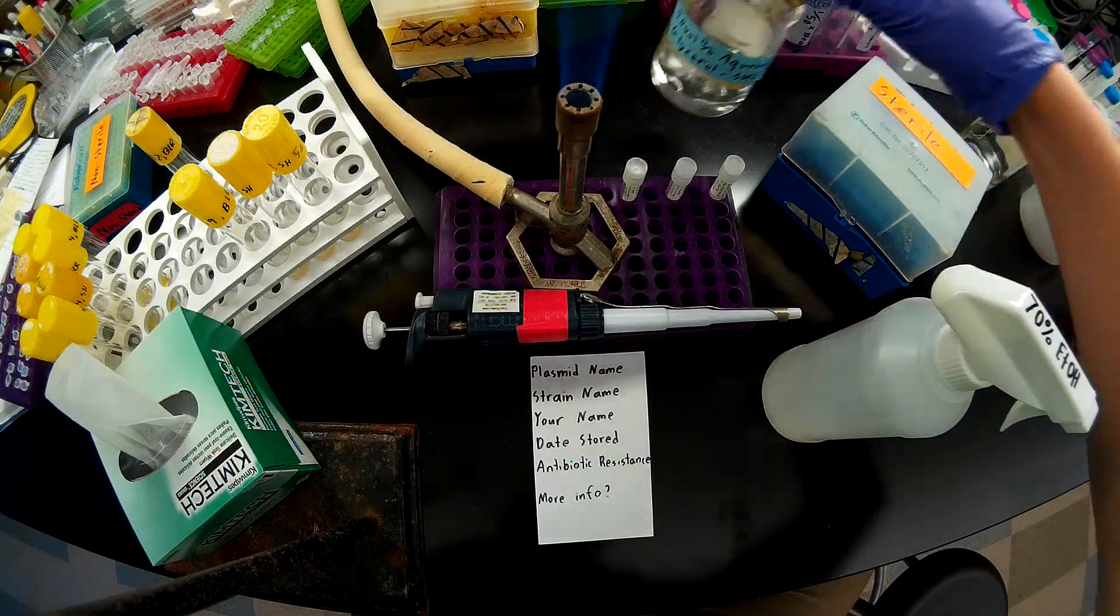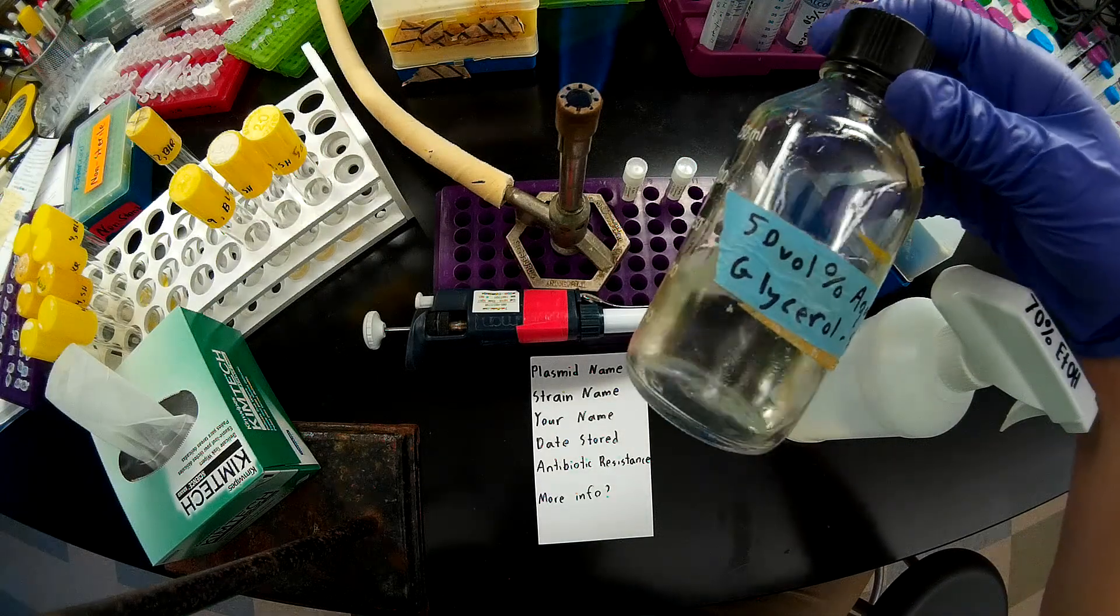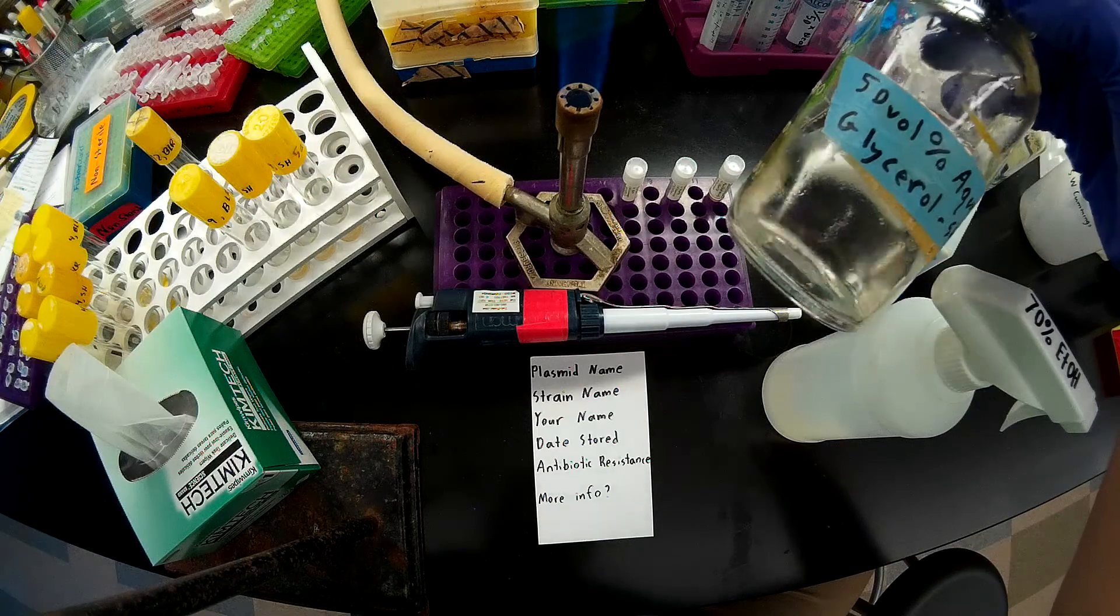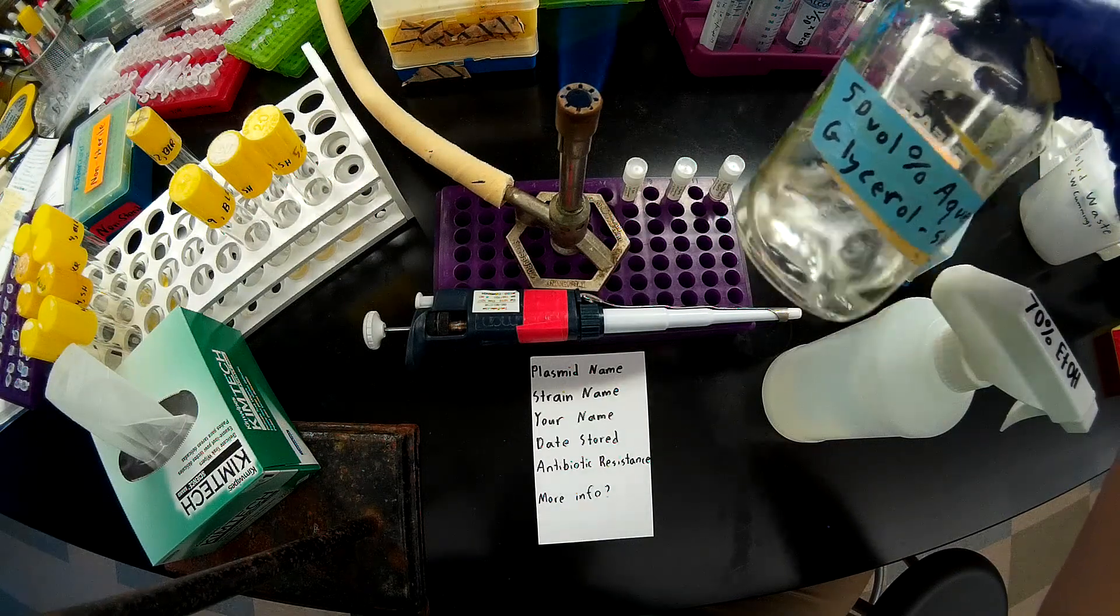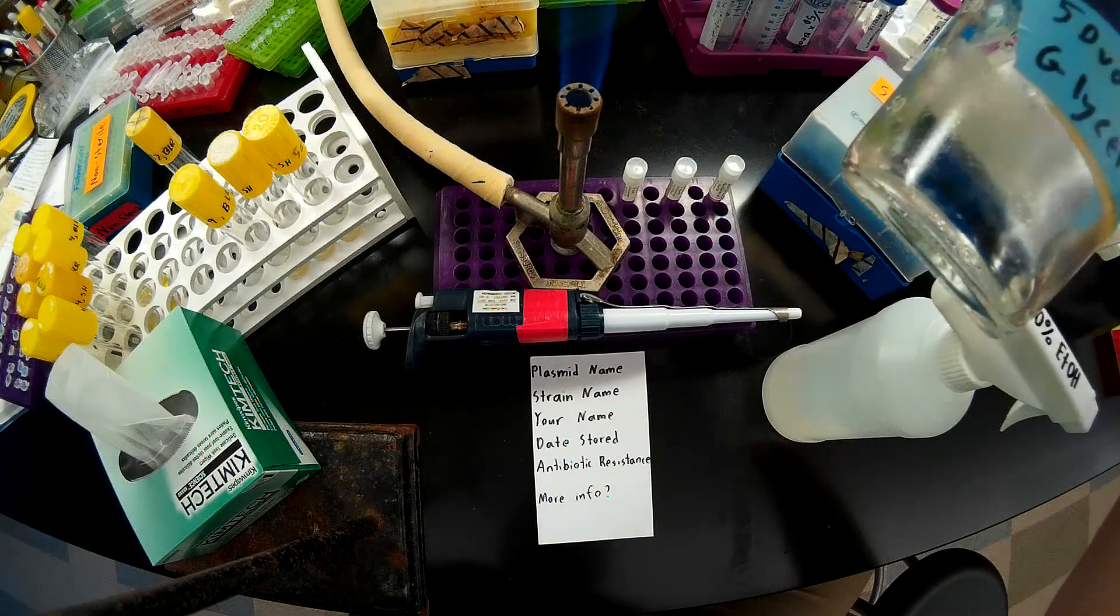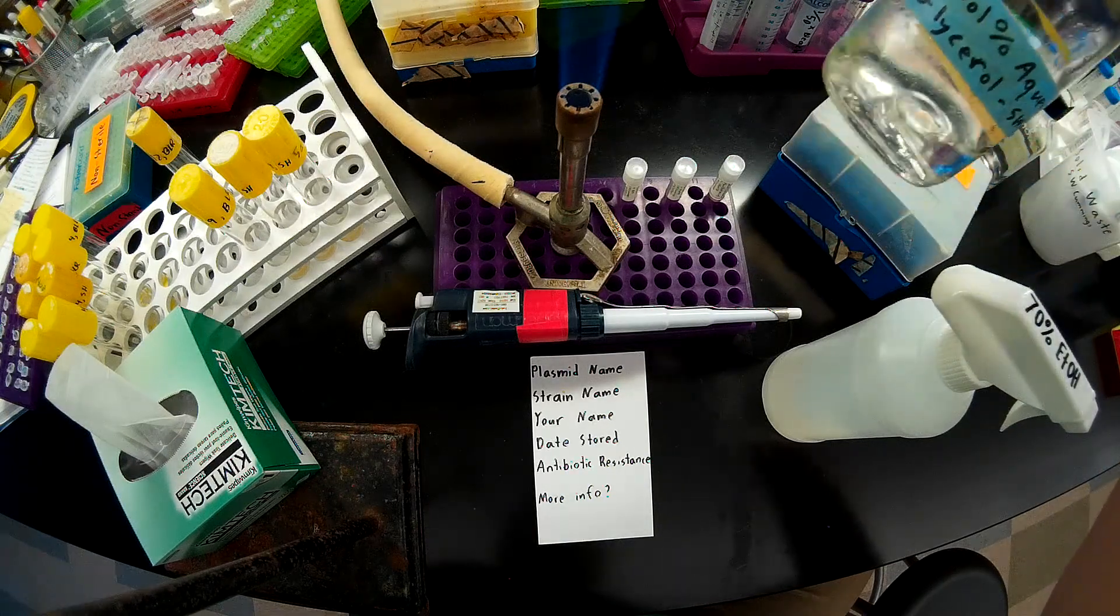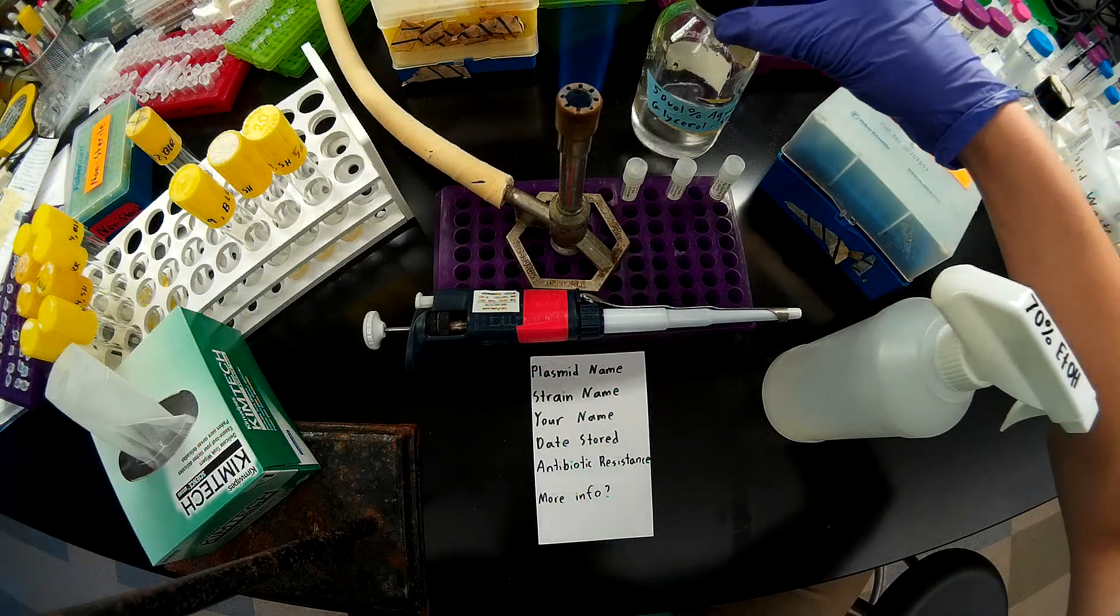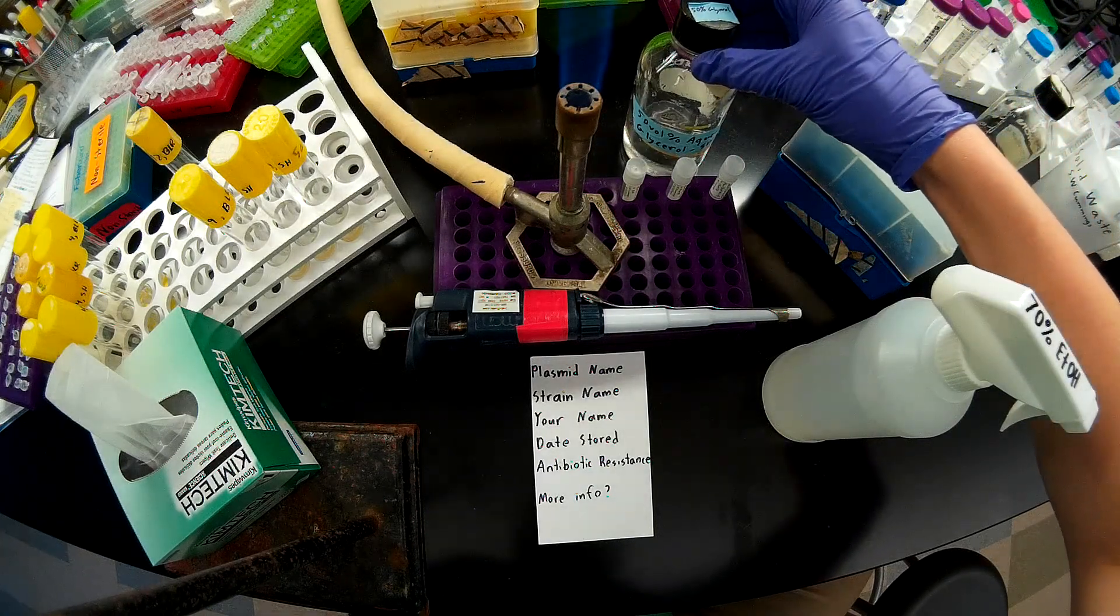To begin, you're going to want to prepare a 50% glycerol solution and sterilize that by autoclaving. If you have some that's already prepared like I do, you want to inspect that really closely at eye level. Swirl it around a little bit to make sure that there are no floaty, fuzzy bits in there that might indicate contamination because you don't want to store contaminated glycerol stocks.